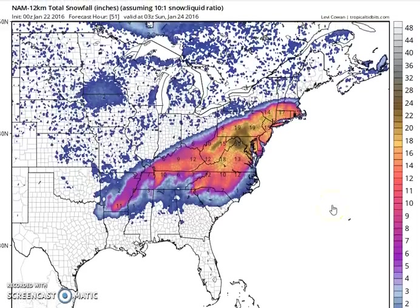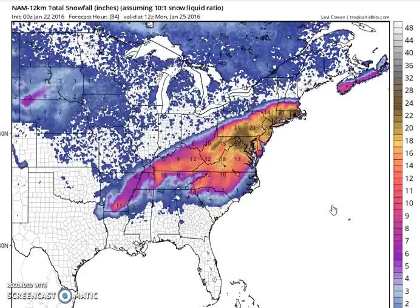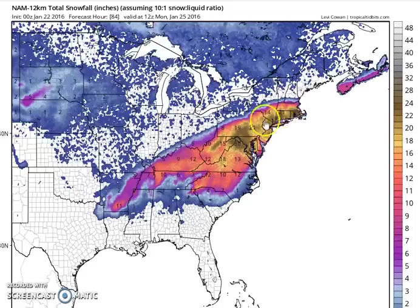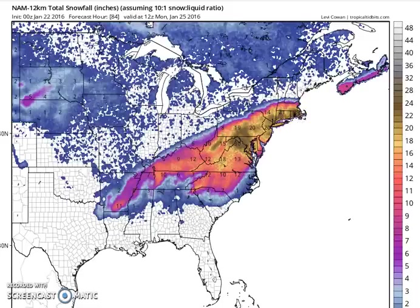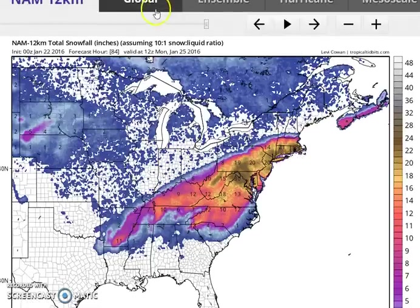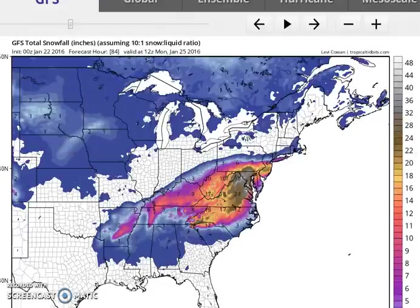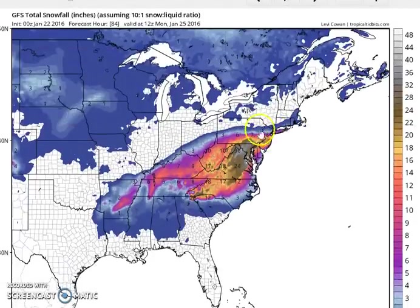Here are all three snowfall maps. This is the NAM final snowfall taken all the way to the end. You can see one-foot-plus snows almost to Boston, well up into the Hudson Valley, all of southeastern New York, all of Long Island, New Jersey — generating one-foot-plus amounts into Connecticut, with a pretty big maximum in Rhode Island and southeastern Massachusetts.